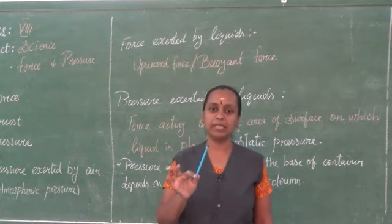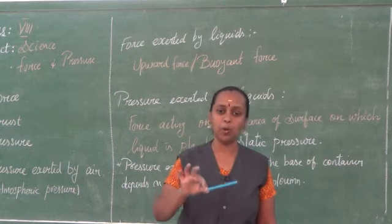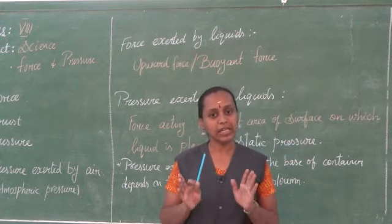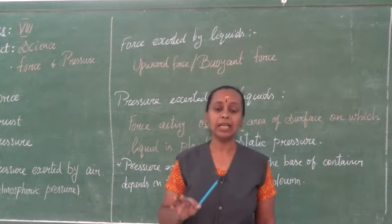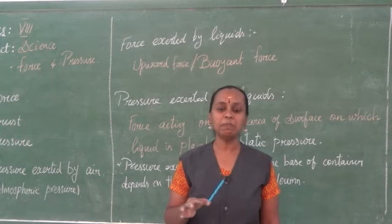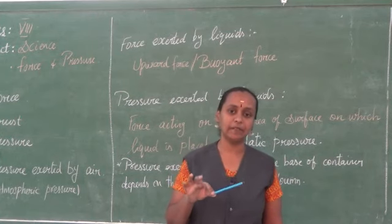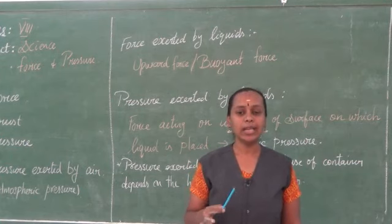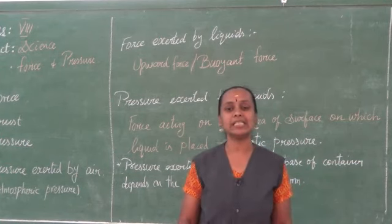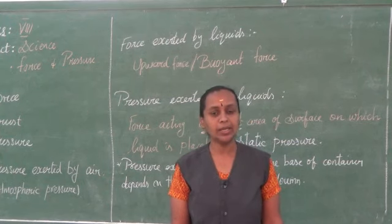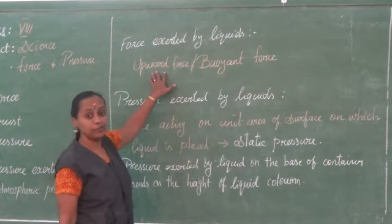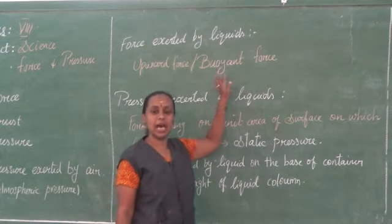If I drop this pencil or a wood piece in the bowl of water, what happens? Here also a force is exerted. The gravitational force is there, but it floats on the surface of the liquid. What makes it float on the surface of the liquid? Here a liquid exerts a force — an upward force is exerted by the liquid, called the buoyant force, or we call it the upward force or uptrust.